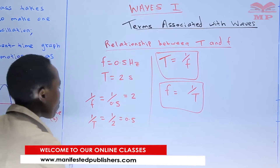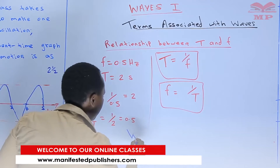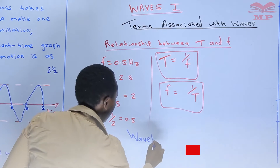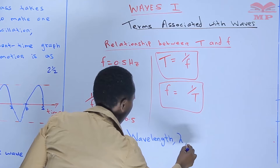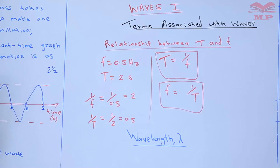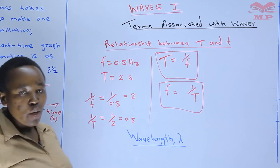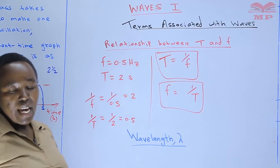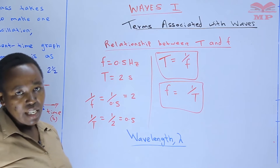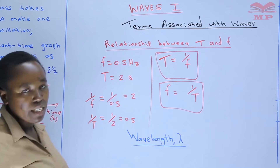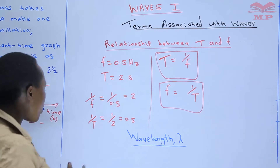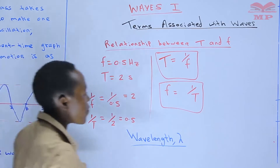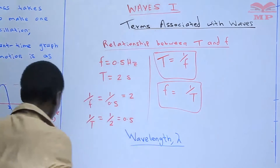Our last term: we have wavelength, denoted by lambda. So when we talk of wavelength, it simply refers to the distance covered in one complete oscillation. So in this one, we are going to consider a different wave, but we can start by defining.